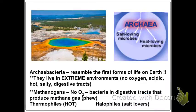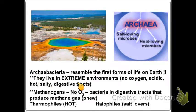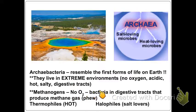Archaeobacteria resemble some of the first life forms on Earth. They live in extreme environments — no oxygen, very acidic, very salty — or even in our digestive tracts. Methanogens live where there is no oxygen; bacteria in our digestive tracts are archaeobacteria, and they produce methane, which is why we have flatulence.